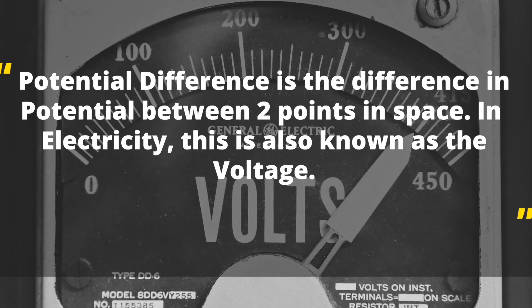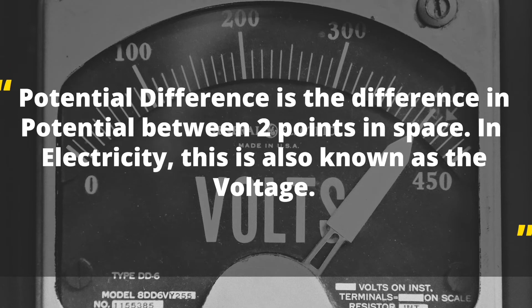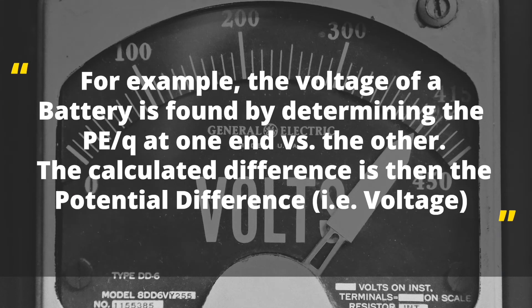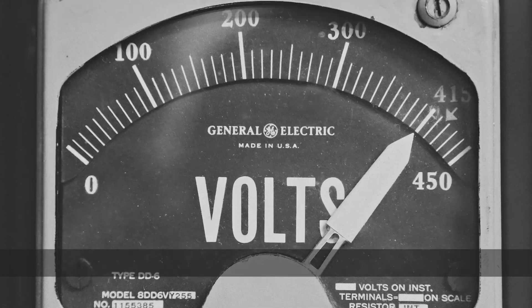Let's define potential difference. Potential difference is the difference in potential between two points in space. In electricity, this is also known as voltage. For example, we measure voltage in a battery by determining the potential energy per charge — the potential — at one end versus the other, and the calculated difference between those two points is the potential difference. We have to find it between two points — that's the key point.